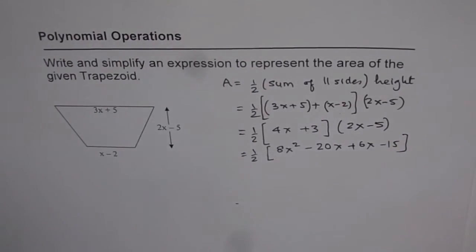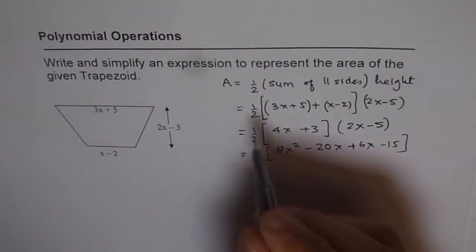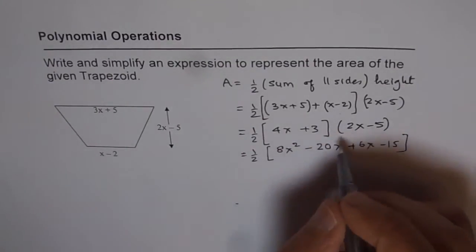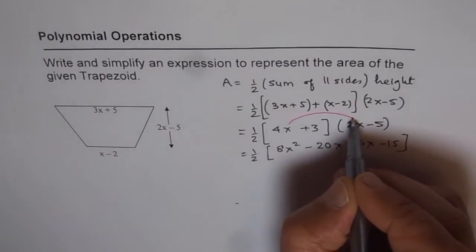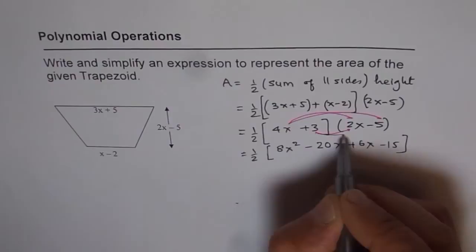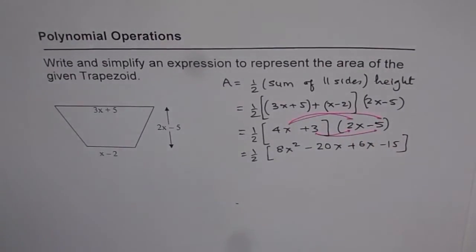Now, you should remember that half is being multiplied to all these things, and therefore, all this should come in a bracket. And here we applied the distributive property, multiplying 4x with these two terms, and 3 with the other two.